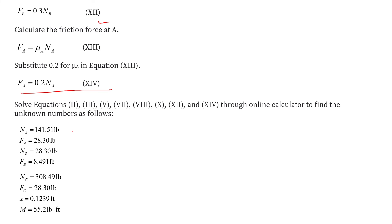From the solution: Na = 141.51 lb, Fa = 28.30 lb, Nb = 28.30 lb, Fb = 8.491 lb, Fc = 28.30 lb, Nc = 308.49 lb, x = 0.1239 feet. The final answer — the couple moment comes out to be 55.21 lb·ft.